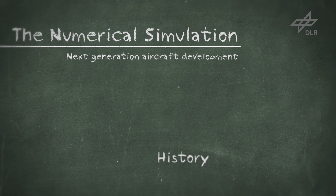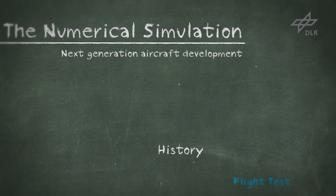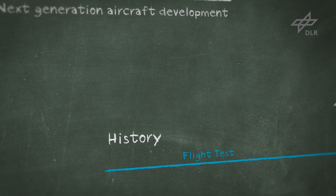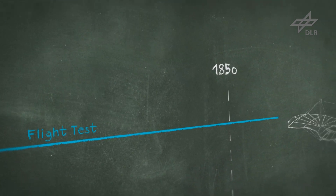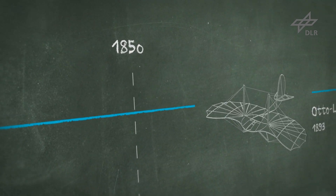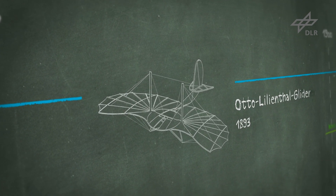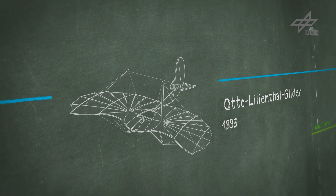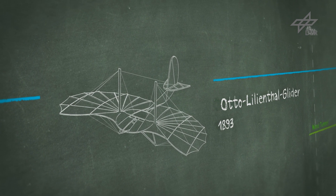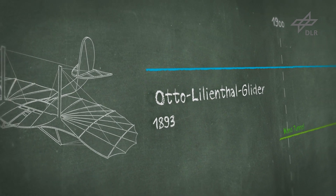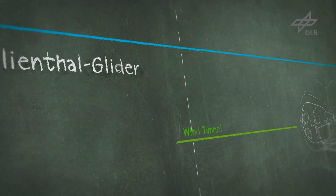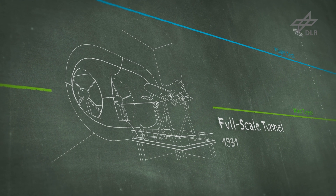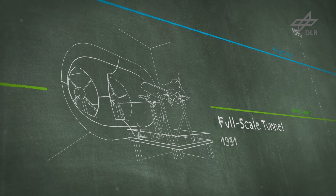The dream of flying is almost as old as humanity. Not until the end of the 19th century did Otto Lilienthal achieve the first sustained human gliding flight, modelled on birds. Countless flight attempts followed. A few years later, wind tunnels became part of aviation research. Already in 1931, full-size aircraft were being tested in wind canals in the USA.